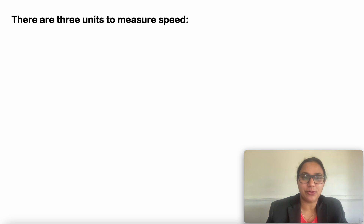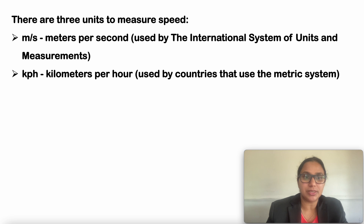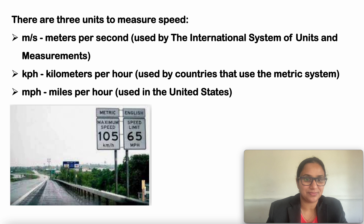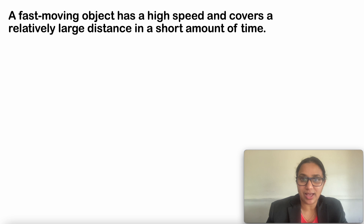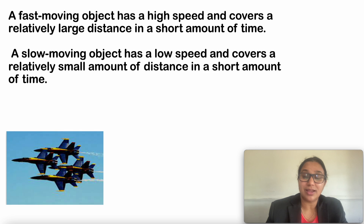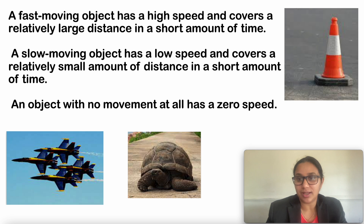There are three units to measure speed. First is meter per second, used by the international system of units (SI units). Kilometer per hour is used by countries that use the metric system. Miles per hour is used in the United States. A fast-moving object has a high speed and covers a large distance in a short amount of time, like a plane or train. A slow-moving object has a low speed and covers relatively small distances. An object with no movement at all has zero speed.